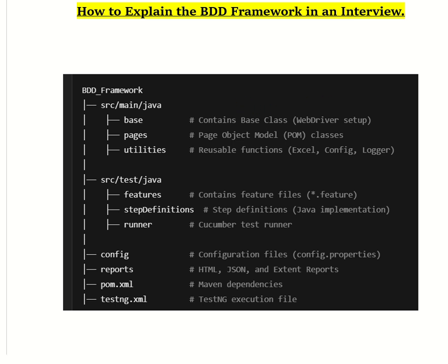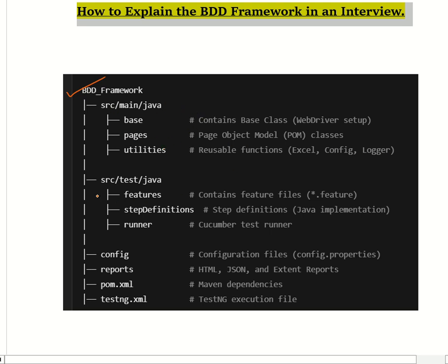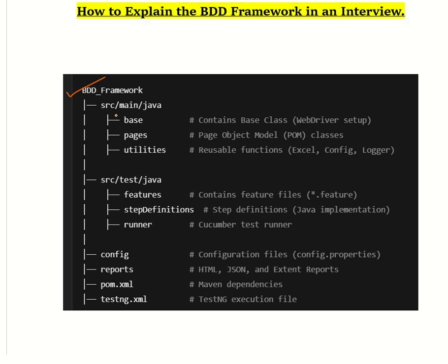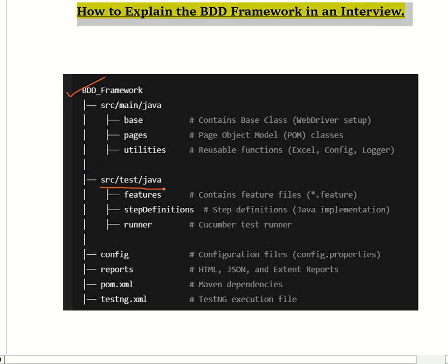Now let's look at the BDD framework folder structure. It contains a src/main/java package with base, pages, and utility folders. There is also a src/test/java package which contains the feature files, step definitions, and the runner.